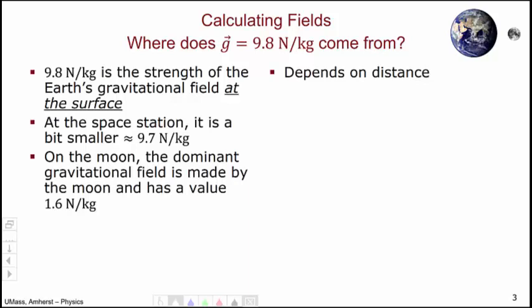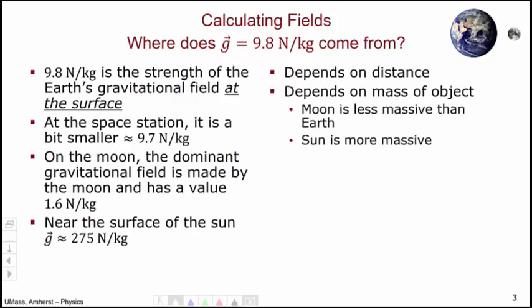On the moon, the dominant gravitational field is generated by the moon and has a value of 1.6 newtons per kilogram. Near the surface of the sun, the dominant gravitational field is from the sun and has a value of about 275 newtons per kilogram. From this, we can conclude that the strength of the gravitational field depends upon the mass of the object creating it. The moon is less massive than the Earth, so generates a weaker gravitational field. The sun is more massive than the Earth, and generates a corresponding stronger gravitational field.